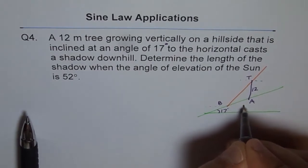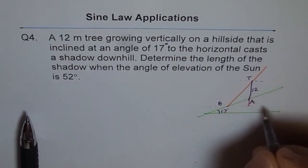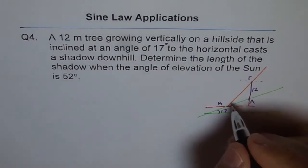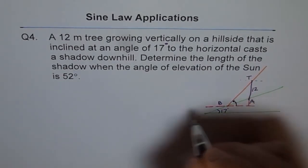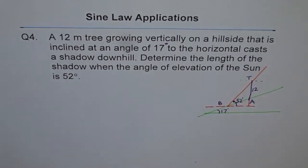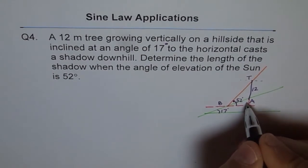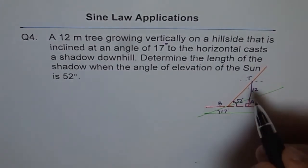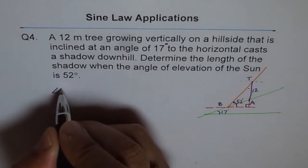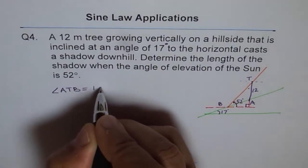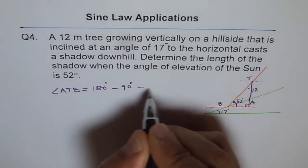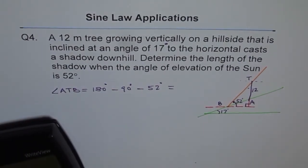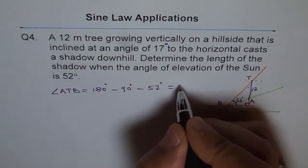Let me draw a horizontal line here and extend this downwards — it helps. I'm drawing a horizontal line since the angle of elevation is always with the horizontal. When you're looking up to the sun, in this case the angle is 52 degrees. If I extend this tree I get a 90 degree angle here, and that helps me find the angle at the top. So angle ATB equals 180 degrees minus 90 minus 52, which gives us 38 degrees.